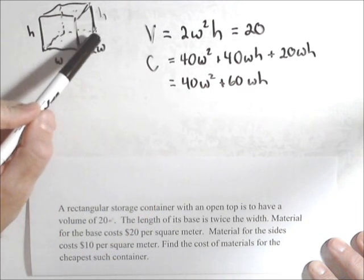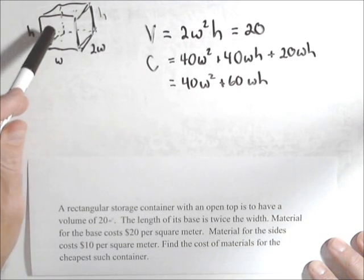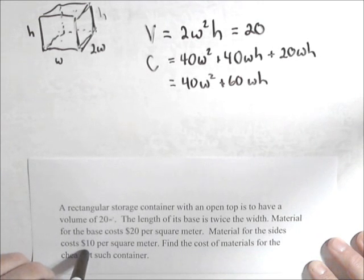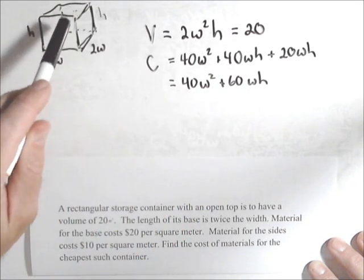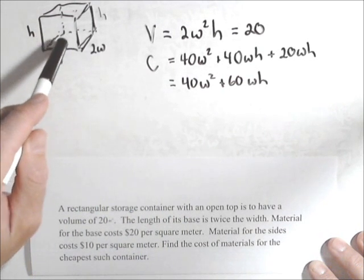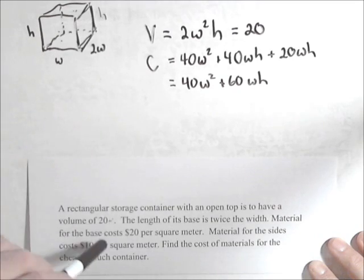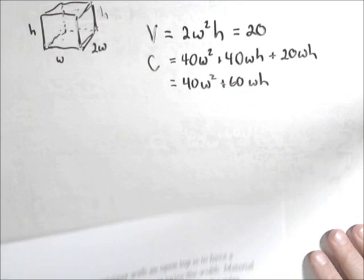The left and the right side, their area is 2WH, and there's two of them, so that's 4WH times $10 per square meter, that's where the 40WH came from. And the front and back are WH for an area, and then there's two of them, so 2WH times the $10 per square meter is where the 20WH came from, and so simplifying a step is what I got.